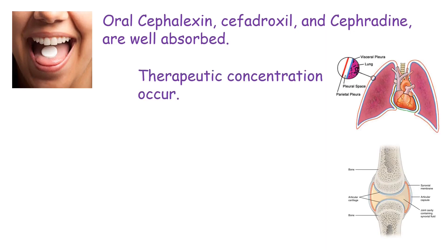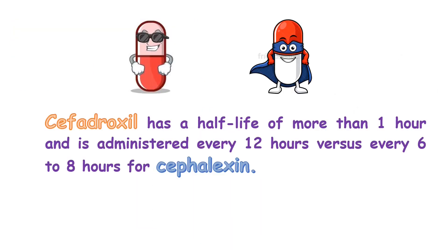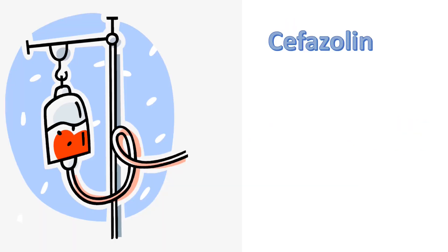Now let's talk about the pharmacokinetics of first generation cephalosporins. Oral agents — including cefalexin, cefadroxil, and cefradine — are well absorbed, achieving therapeutic concentrations in most tissues including pleura, synovial fluids, and bone, but not in middle ear fluid. Cefadroxil has a half-life of more than one hour and is administered every 12 hours, whereas cefalexin needs to be administered every six to eight hours. The IV first generation cephalosporin is cefazolin.